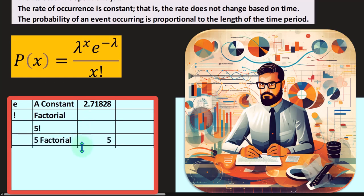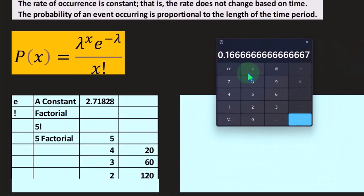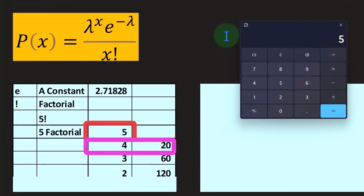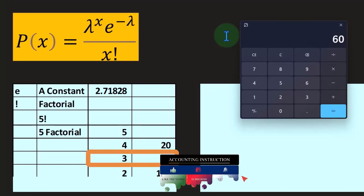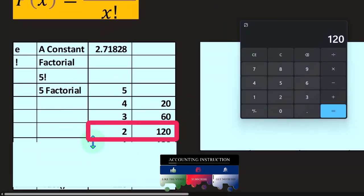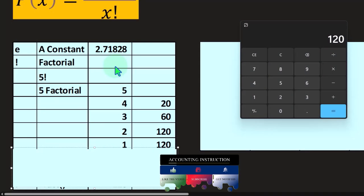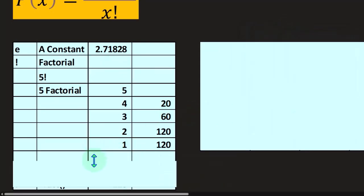A factorial — for example, five factorial — would be five times four times three times two. Using a calculator: five times four is 20, times three is 60, times two is 120. That's the factorial, which is what the exclamation mark represents in the formula.